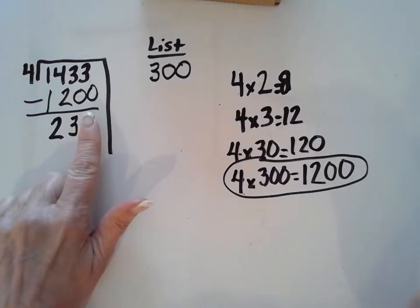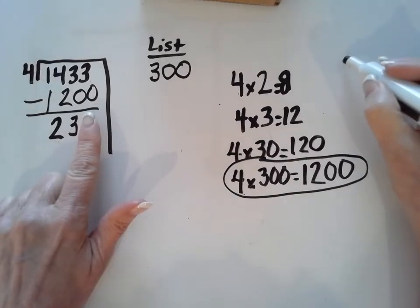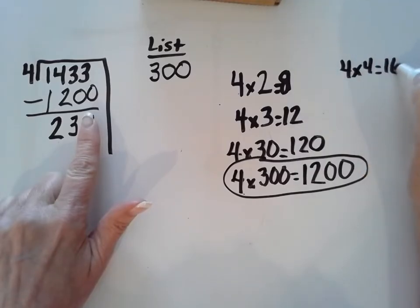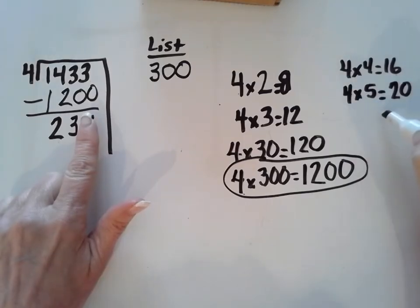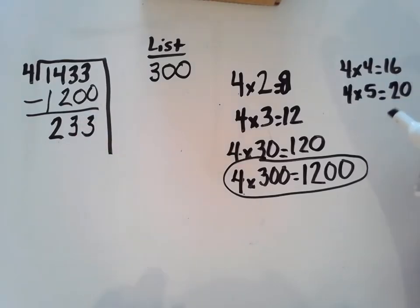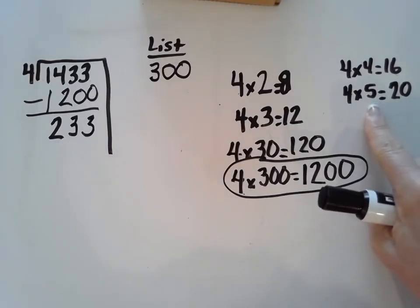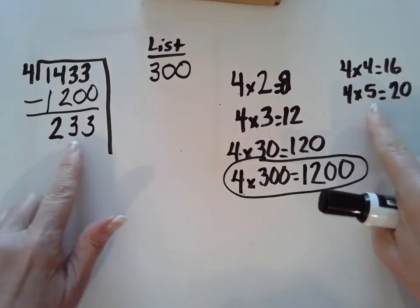Now, 4 times something will get me close to 23. Let's try. Let's see. We said 4 times 3 was 12. We said 4 times 4 is 16. What about 4 times 5? That's 20. That's pretty close. And I know if I were to go 4 times 6, that would be 24. So that would go over. I don't want to go over. So now I can look at this number in the hundreds, and I'm going to use the friendly number 5 to make a number close to 233.